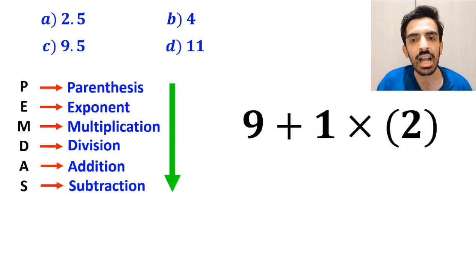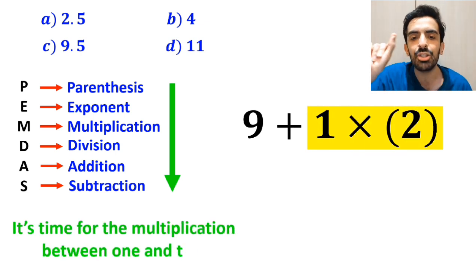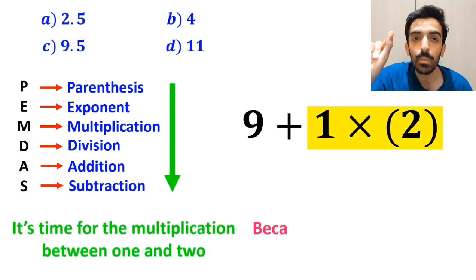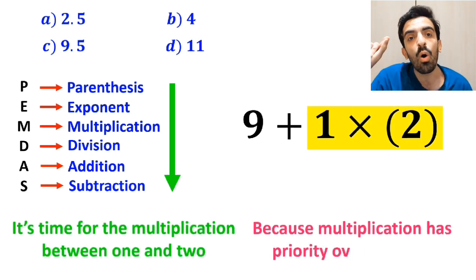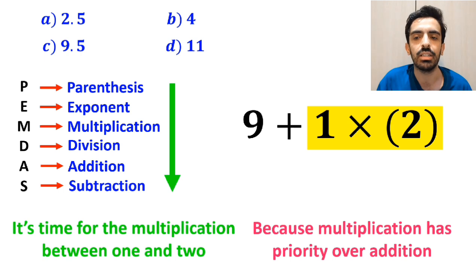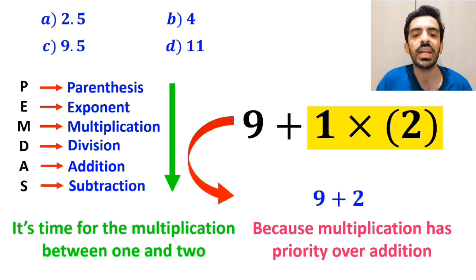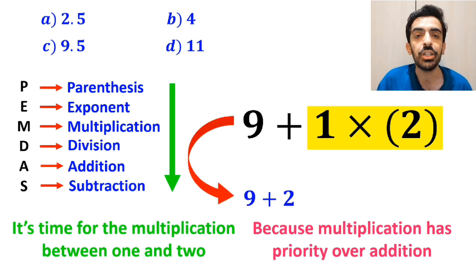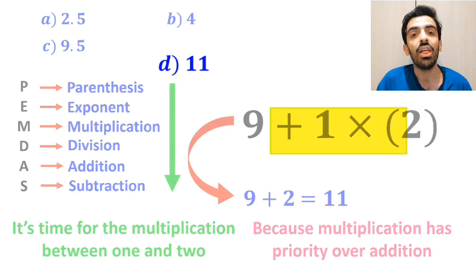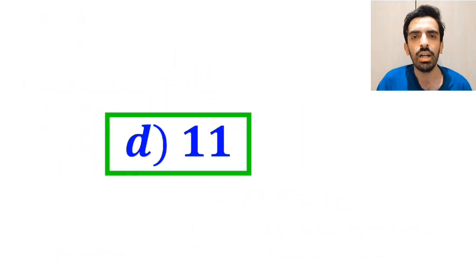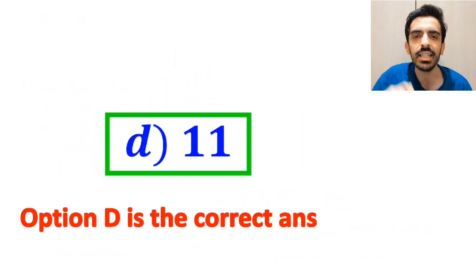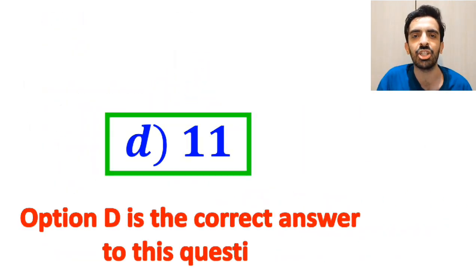In the next step, it's time for the multiplication between 1 and 2, because multiplication has priority over addition. So instead of this expression, we can write 9 plus 2, which ultimately gives us the answer 11. Therefore, option D is the correct answer to this question.